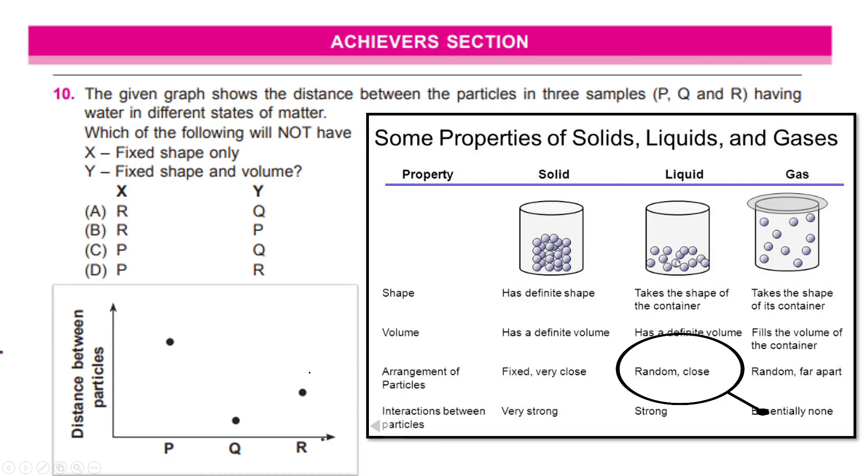Here you can see that solid is where the particles are fixed and very close and liquid is where they are close but not very close. Randomly they are put but gaseous state is where they are very far from each other. So, P which has the highest distance between its particles would be the gaseous state, Q would be the solid state which is the least distance between particles and R will be liquid state. Now, from the properties if you notice, gas which is here takes the shape of its container that means it has no fixed shape and fills the volume of the container. So, it does not have a fixed volume. So, gas is the one which does not have fixed shape and volume.